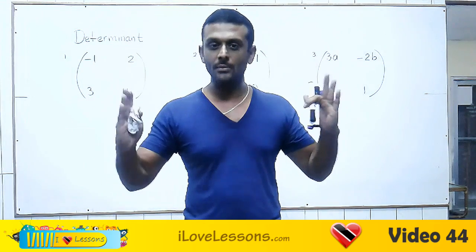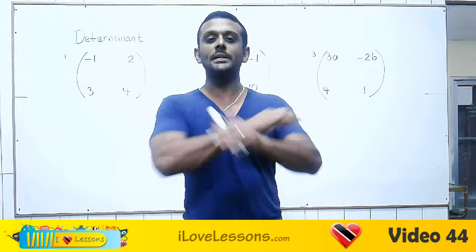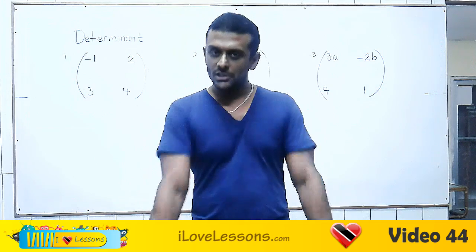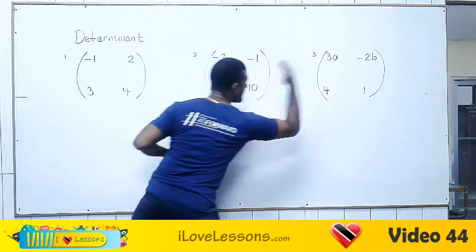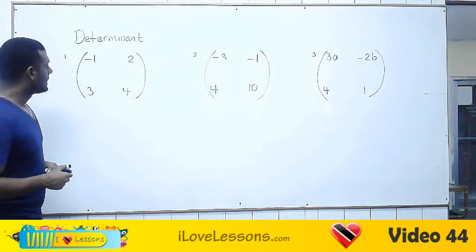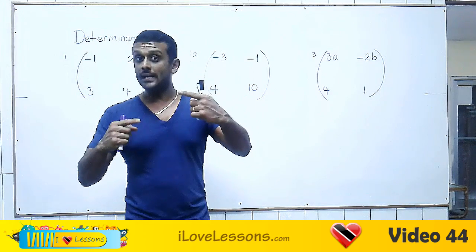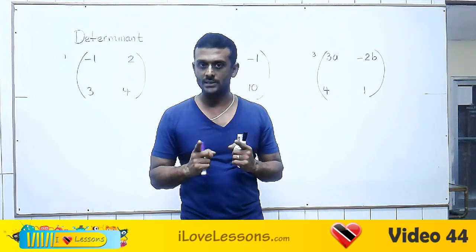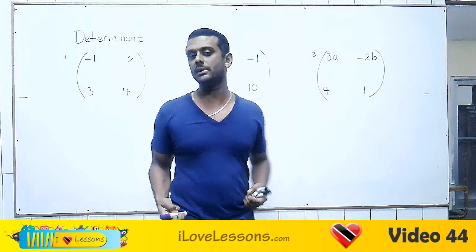Don't let the big word 'determinant' fool you. To find the determinant of a matrix is going to be super easy despite its long, scary name. I'm going to show you how to find the determinant now — I'm going to do three examples for you and you're going to be surprised how easy it is. Just be on the lookout for two minus signs. Sometimes two negatives will touch to give you a positive — it won't happen all the time, but it will happen sometimes.